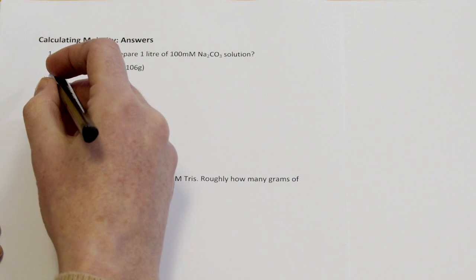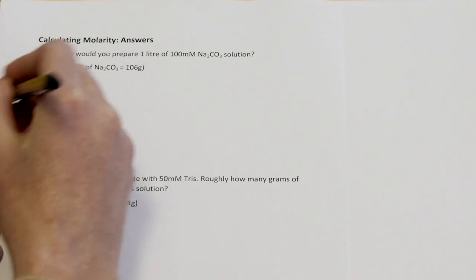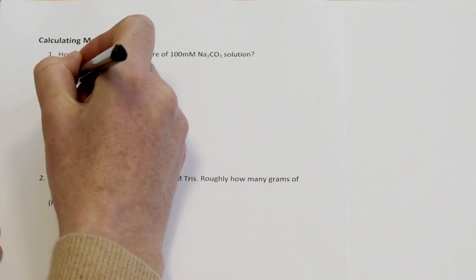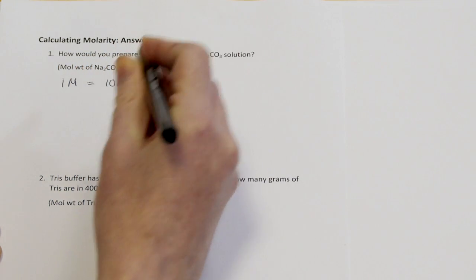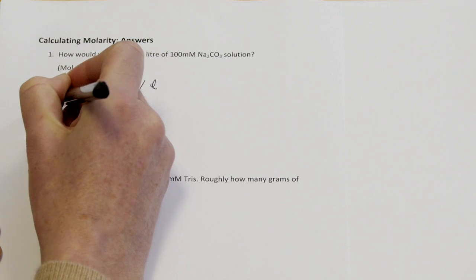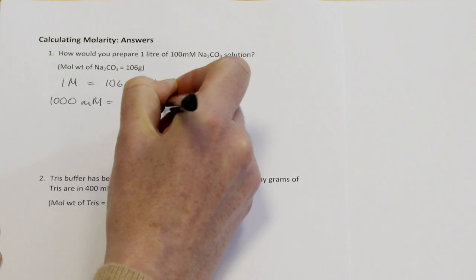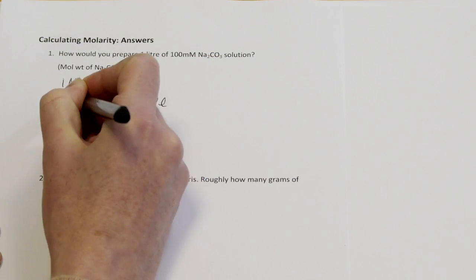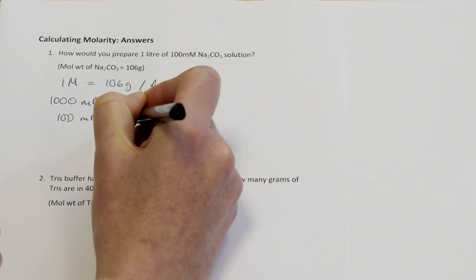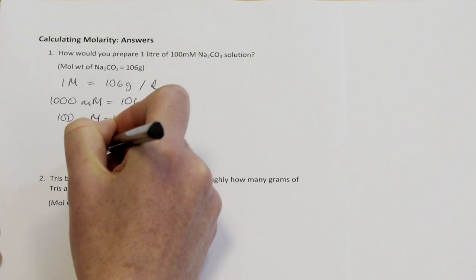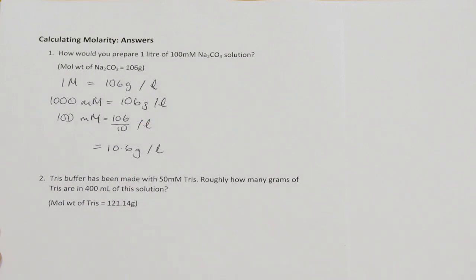The first question was how to prepare one litre of a 100 millimolar sodium carbonate solution. The molecular weight is given as 106 grams. A one molar solution equals 106 grams in a litre, and one molar equals 1000 millimolar. We want 100 millimolar, which is divided by ten, so I need to divide 106 by ten, giving 10.6 grams in a litre.